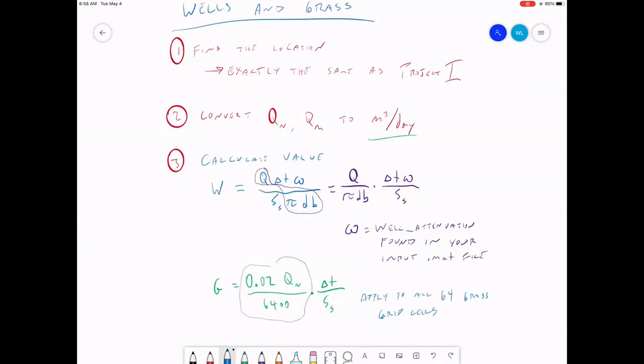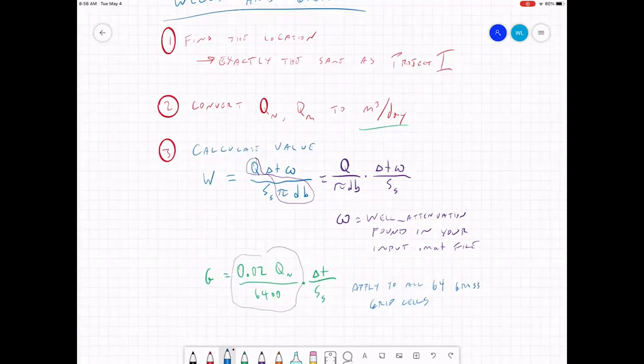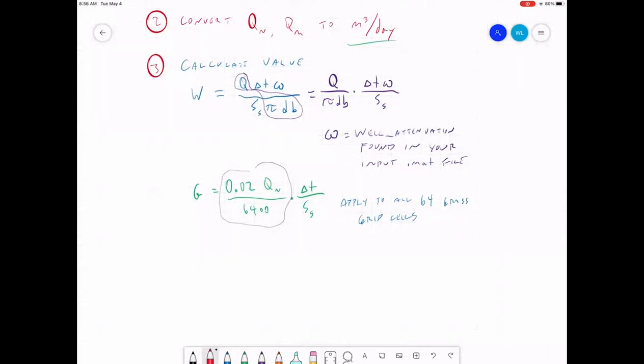Apply this to all 64 grass grid squares. Okay, that's how we calculate our values. Now to place them in your setup, you're going to do this before you vectorize H into the B matrix.